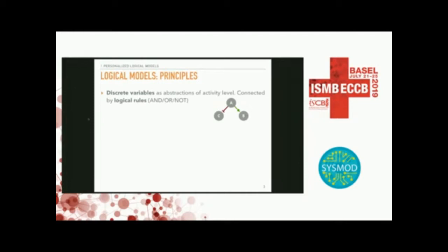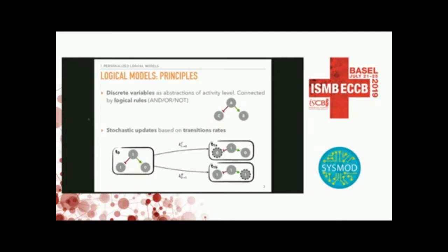All these entities are connected by logical rules written with AND or NOT — a very simple modeling framework. There are different ways to simulate those models. The one we'll use: if you're in a given situation, you have two possible updates. Either you can activate node B since A is active, or you can inhibit this one. Instead of performing both updates synchronously, we choose to focus on one specific transition and perform updates one at a time.